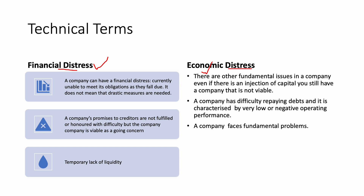When we talk about financial distress, what we mean here is that a company is currently unable to meet its obligations as they fall due. But this does not mean that you are going to take drastic measures such as liquidation, which is one of the insolvency procedures. We are going to be explaining what liquidation is and at what point can we say that a company should be liquidated.